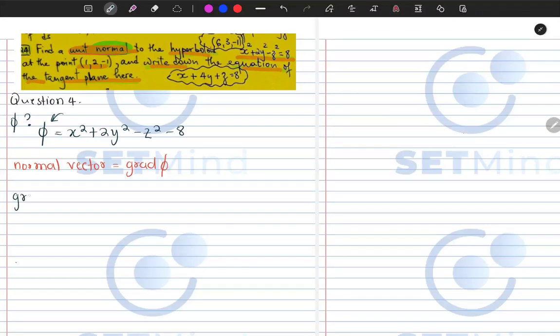So the first place we should start from is by looking for the gradient of our function phi. As you can see it depends on x, y, and z. So if x squared plus 2y squared minus z squared minus 8, by now you should be comfortable with using the gradient operator.